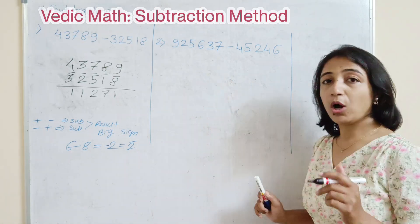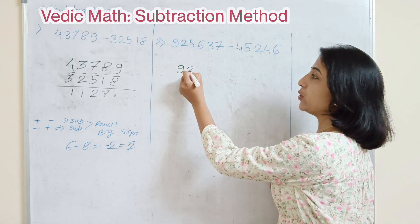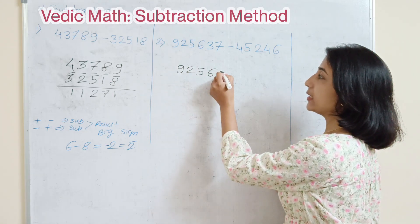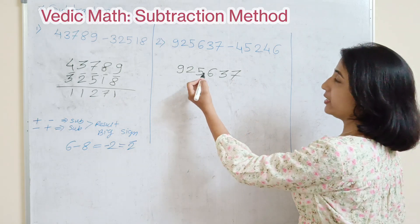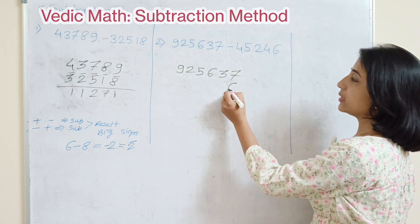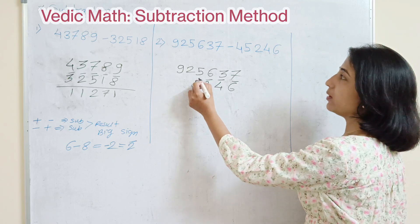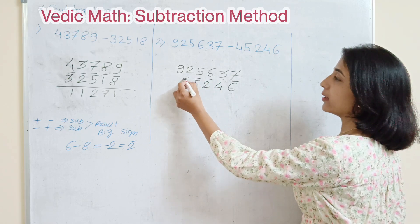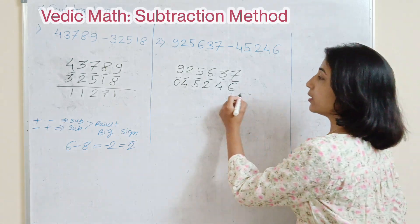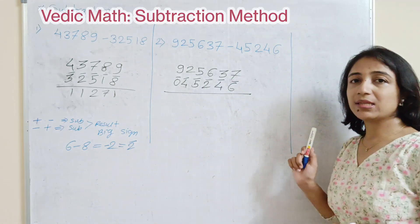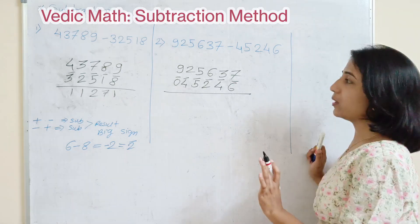Now sometimes the question is more complex. Here our first number is 925637, and we are subtracting another number. I will place a bar on each digit of the number being subtracted — so it is 6-bar, 4-bar, 2-bar, 5, and 4-bar. Where there is no digit, you can write 0-bar. We always take the subtraction as bigger number minus smaller number.